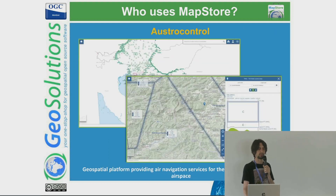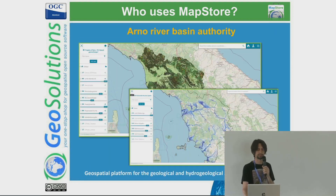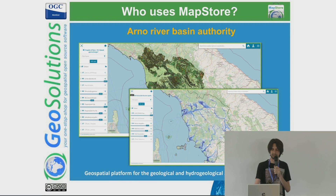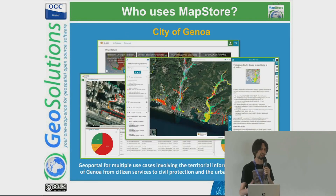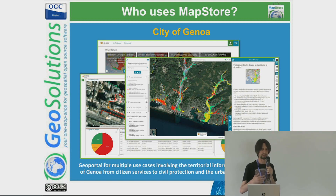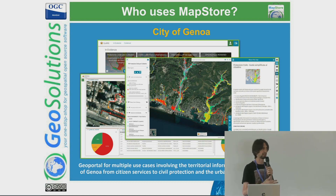We also have a project for air navigation control. Another example is a river authority in Italy using MapStore for hydrological assessment in Tuscany. Finally, the city of Genoa is using it to engage both citizens and technical people.